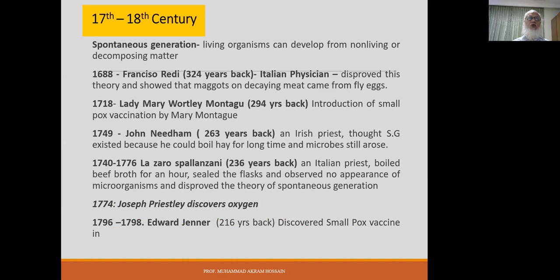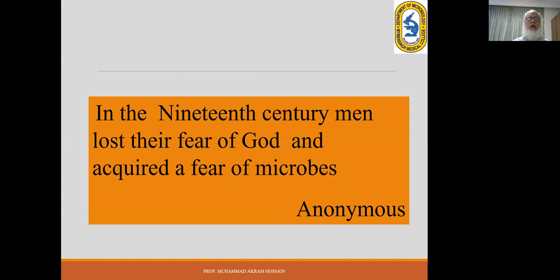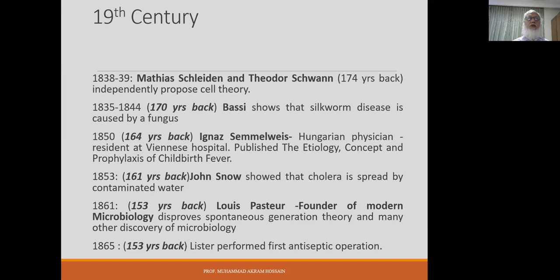During the 17th to 18th century, there were debates between spontaneous generation and attempts to disprove it. In 1718, Lady Mary Montagu introduced smallpox variolation from Turkey to England, which was followed by Edward Jenner. In the 19th century, Ignaz Semmelweis, the first Hungarian physician, published concepts on childbed fever. John Snow showed that cholera is spread by contaminated water.